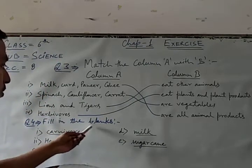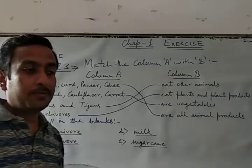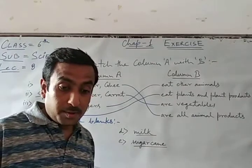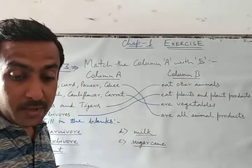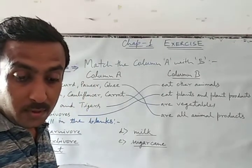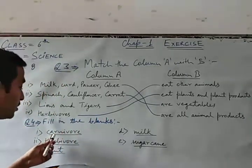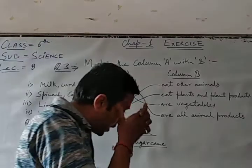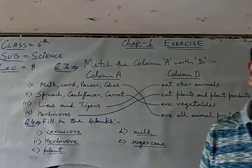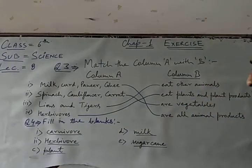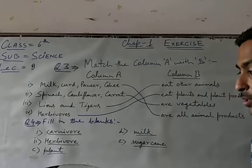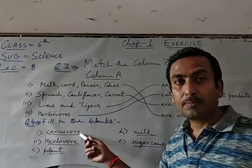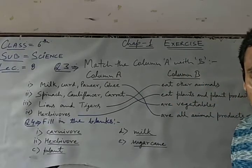Now question 4, fill in the blanks. My first is tiger is dash because it eats only meat. So tiger is carnivores. So it eats only other animals. So we will have carnivores fill in the blanks.